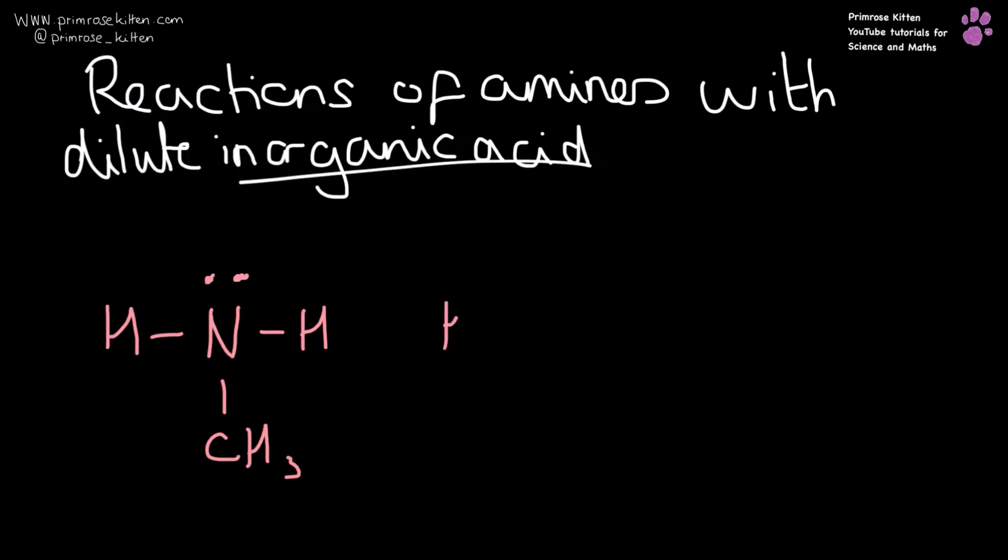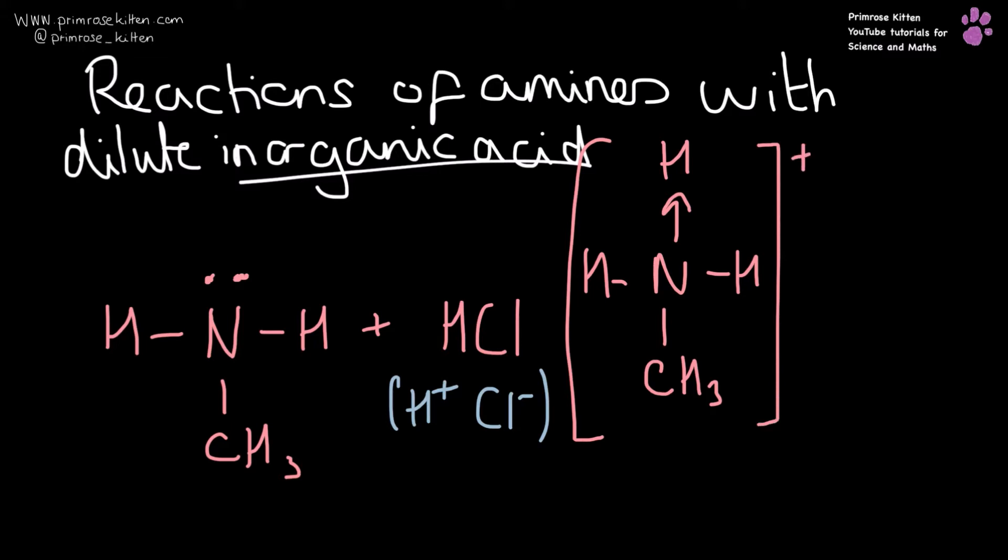We add hydrochloric acid to our methyl amine. What we need to think about when we're adding things is what ions is it going to form when it is in solution. This is going to dissociate into a hydrogen ion and a chloride ion. Now, because ammonia is acting as a base, we are going to get the hydrogen ion accepted over here. That is going to form a positive ion, and then we are going to get our chloride ion as well.